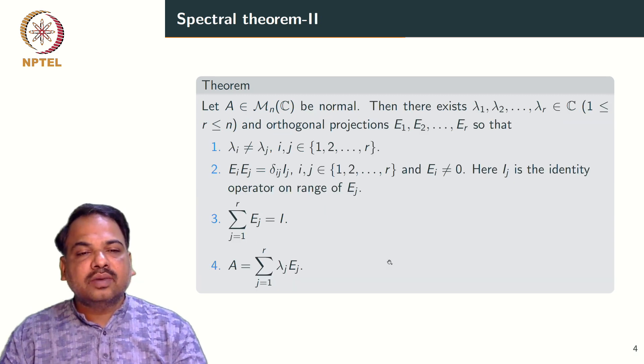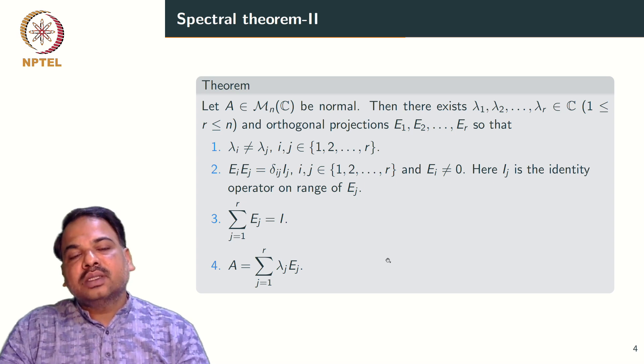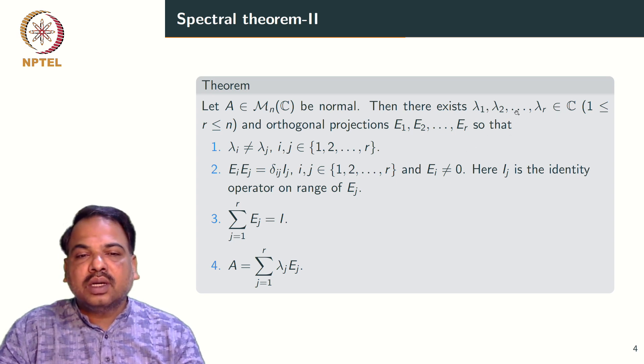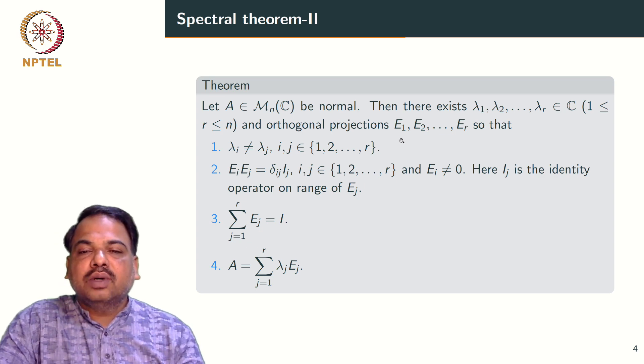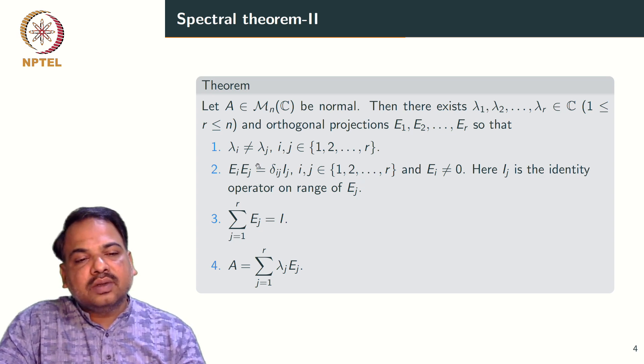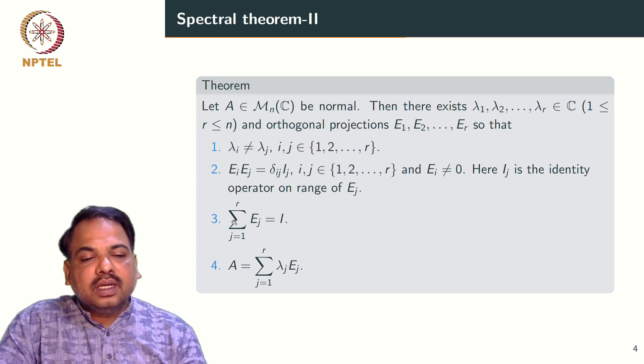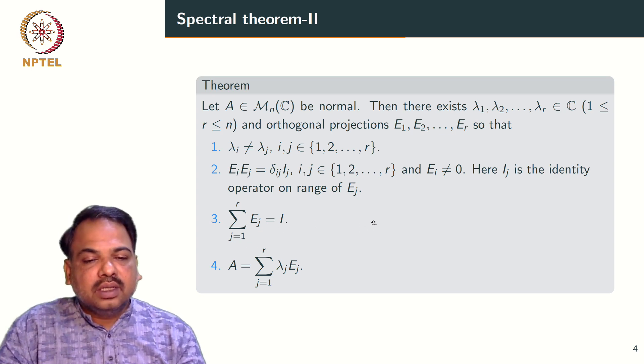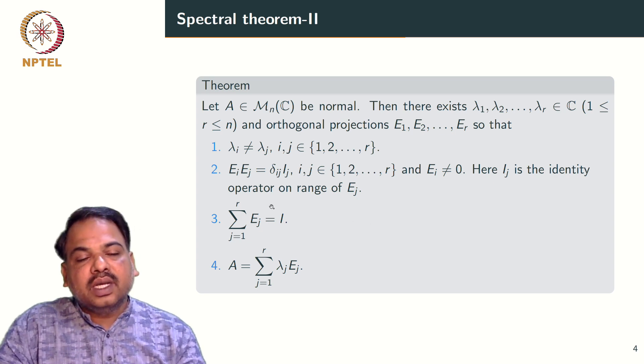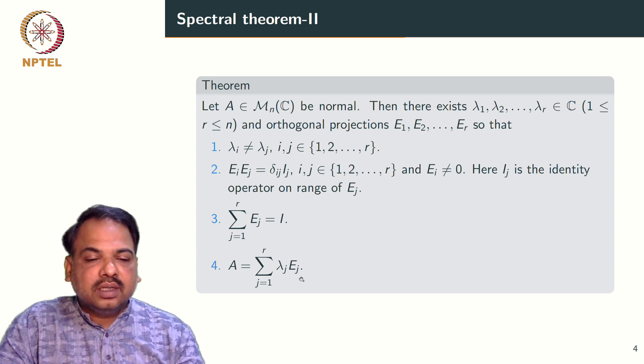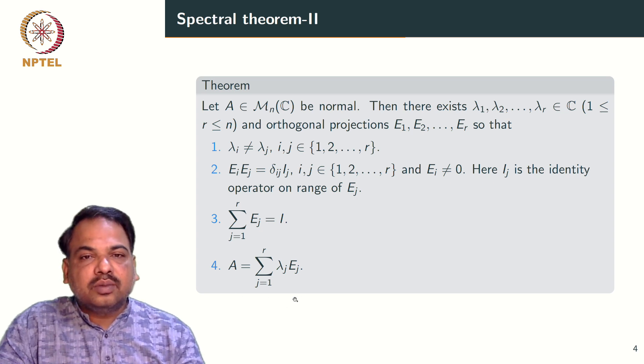Let us recall one more important result from linear algebra. If A is an n by n normal matrix with complex entries, then there exist complex numbers lambda 1, lambda 2, up to lambda r which are distinct and orthogonal projections E1, E2, up to Er such that they are mutually orthogonal in the sense that range of Ei is orthogonal to range of Ej for i not equal to j and each of them is non-zero. And the third condition says that summation j equals 1 to r, Ej is identity. So this can be expressed as follows: C power n can be split as orthogonal direct sum of eigen spaces of A. And the fourth condition says that summation j equals 1 to r, lambda j Ej. That means we are writing A as linear combinations of orthogonal projections onto the eigen space.